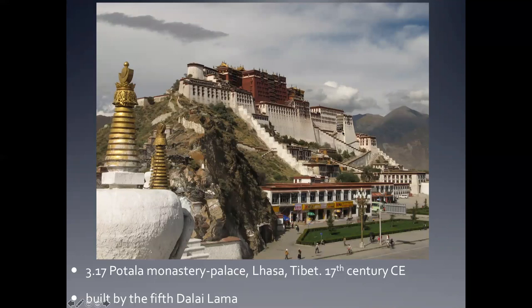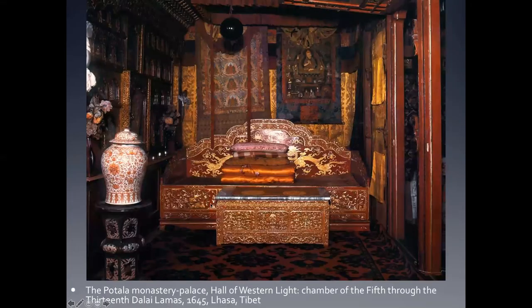This is the Potala Monastery Palace, and if it looks like a fortress, that's because it is. These were military leaders, driven to this region by foreign powers, and people looked to the Lamas for military protection. This was built by the Fifth Dalai Lama. There's a fortress at the base, but quite beautiful structures above. The interior is wall-to-wall luxury, everything decorated — which is what you tend to see with autocratic monarchies: this display of wealth.